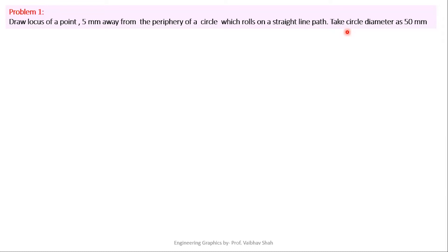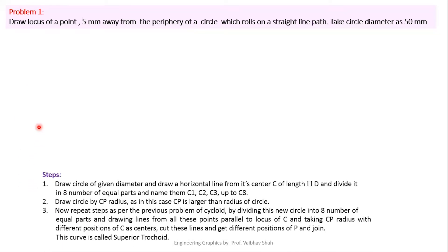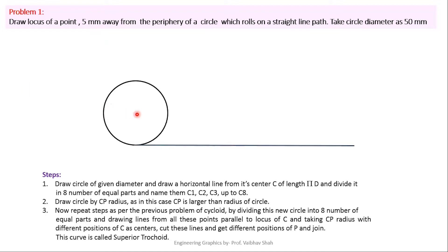Here we have to take the circle diameter of the rolling circle as 50 mm. So let us start. First, we draw one circle with the given diameter — the rolling circle with diameter 50 mm. After that, since we have to trace the path 5 mm away from the periphery of the circle, we draw a straight line or tangent line from the rolling circle. The length of this line must be the circumferential length of the rolling circle, which is pi×d. Here the diameter is 50 mm, so the circumferential length would be pi×50, and that answer gives us the required line length.